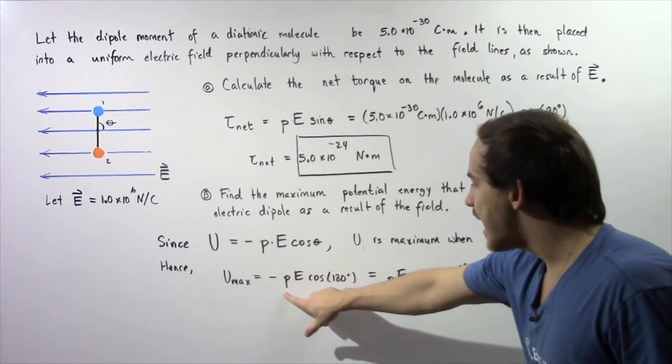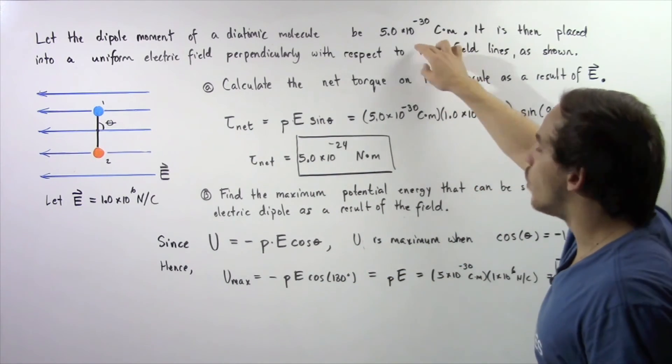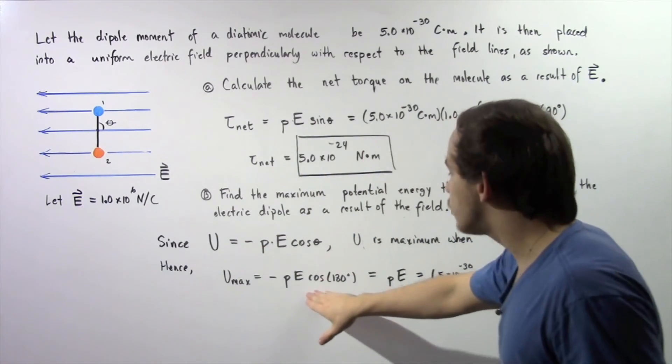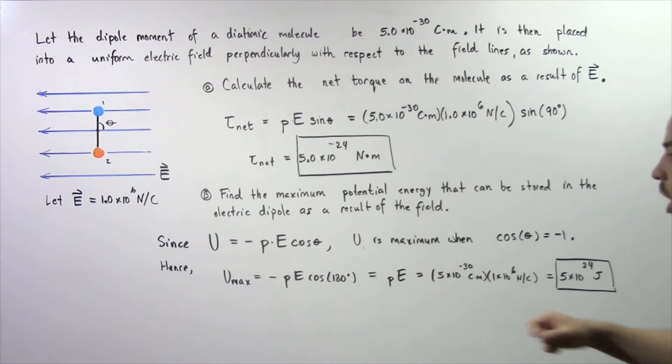So we plug in our P which is once again this quantity, we plug in our E which is this quantity and cosine of the angle 180 is negative 1. So this becomes a positive and we're left with 5 times 10 to the negative 24 joules of energy.